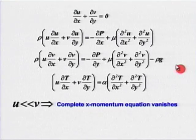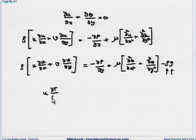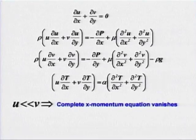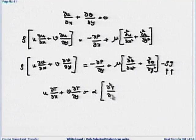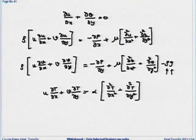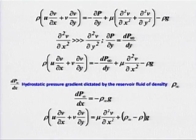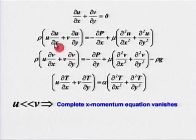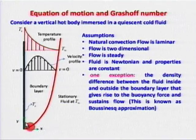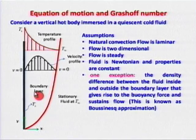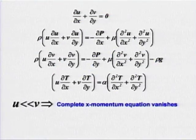The energy equation is: u del-T/del-x + v del-T/del-y = alpha times (del²T/del-x² + del²T/del-y²). Unlike flow over a flat plate where u dominates, here v is more important than u. The complete x-momentum equation vanishes, which implies pressure is a function of y only, not x.